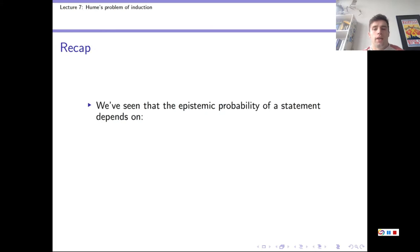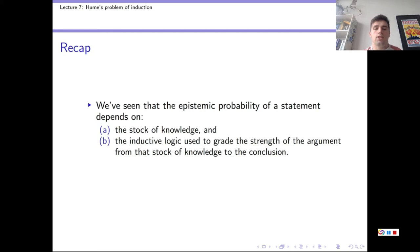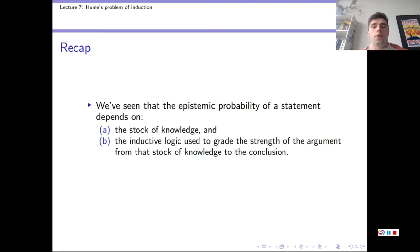Last time, we saw that the epistemic probability of a statement depended on two things: the stock of knowledge, and the inductive logic used to grade the strength of the argument from that stock of knowledge to the conclusion. If a claim about the future has a high epistemic probability, we predict it will prove true; as epistemic probability decreases, so does our confidence. We're in the realm of inductive arguments. The conclusions of deductively valid arguments don't contain anything not already implicitly said in the premises, so to conclude something new, we need to move beyond deductively valid arguments and use inductive ones.